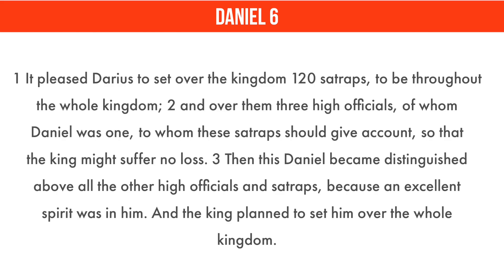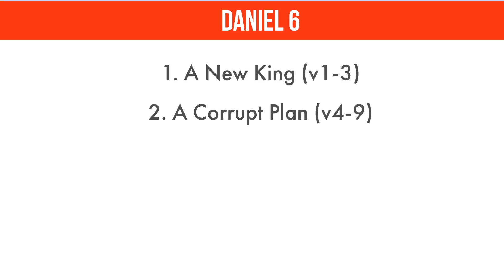King Darius holds Daniel in extremely high regard. Look at verse 3: 'Then this Daniel became distinguished above all the other high officials and satraps, because an excellent spirit was in him, and the king planned to set him over the whole kingdom.' So Daniel's been given a high-ranking position in King Darius' new system. But notice secondly: a corrupt plan.